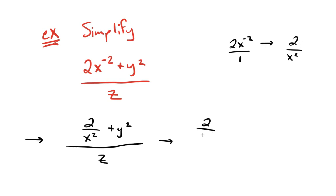So we have 2 over x squared divided by z, and then we have y squared divided by z.